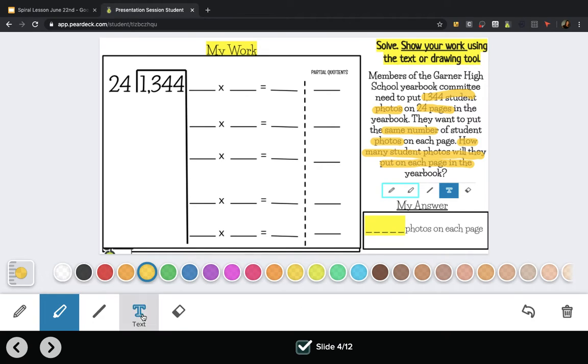So I'm going to start using partial quotients and I'm going to use the pencil button, but you can use the text button if that works better for you. I'm going to start with 24 times 10 because that's nice and easy. I know that's 240. Now that's not that many photos especially when you have 1,344, but let's see where it brings us.